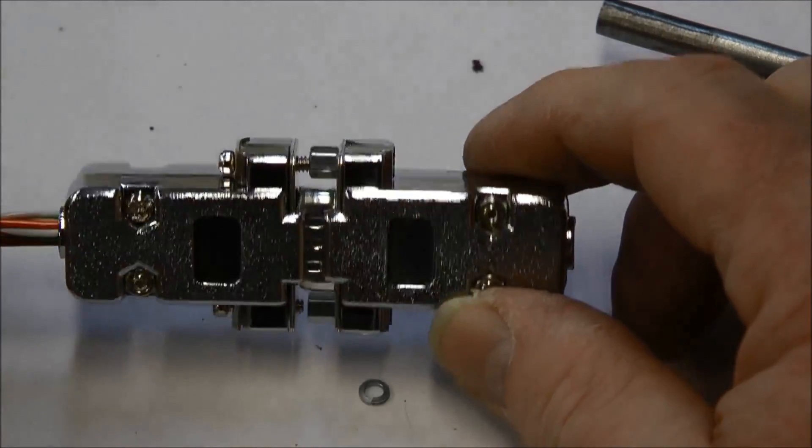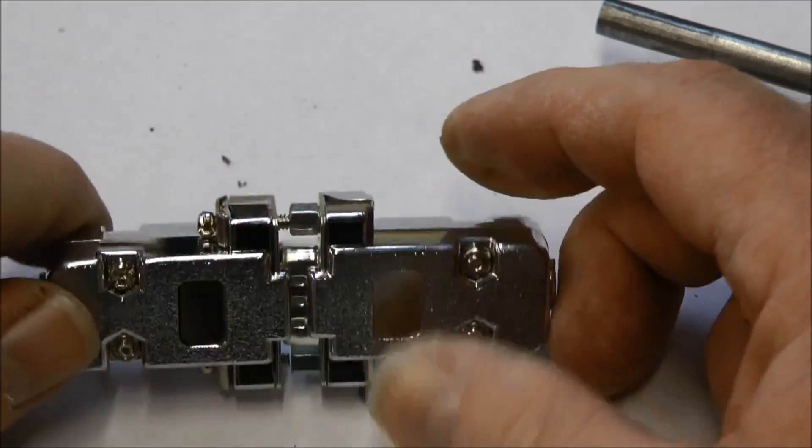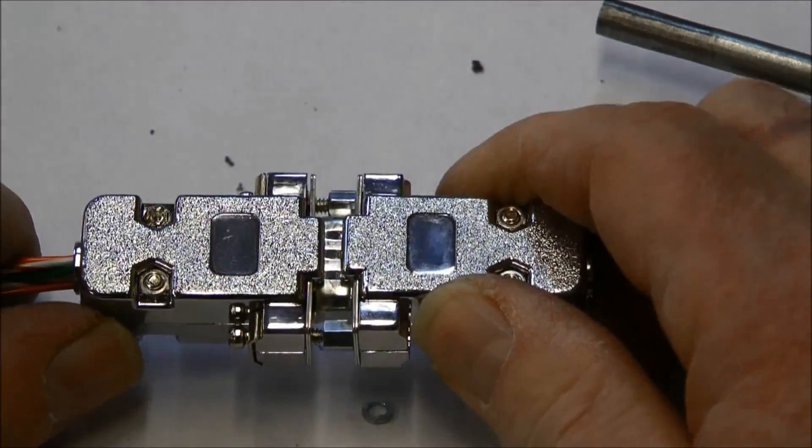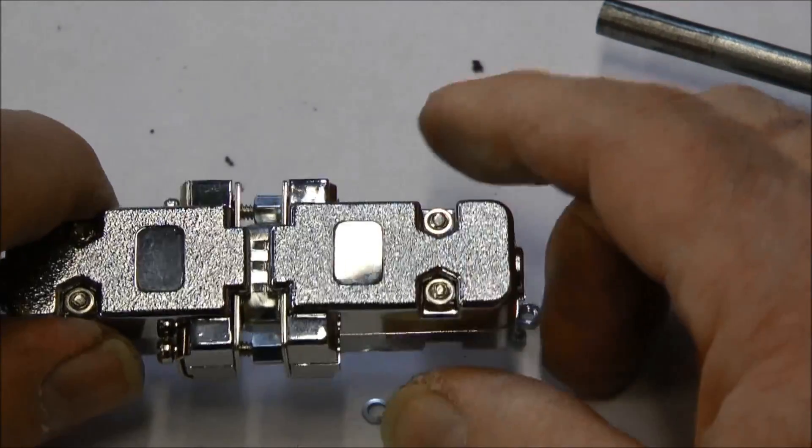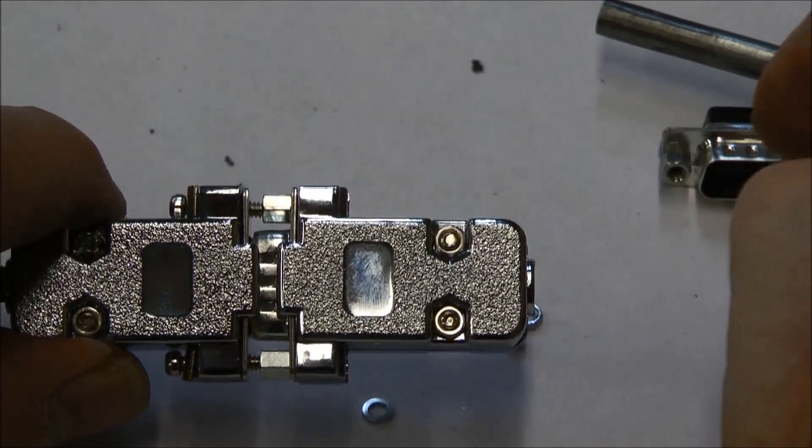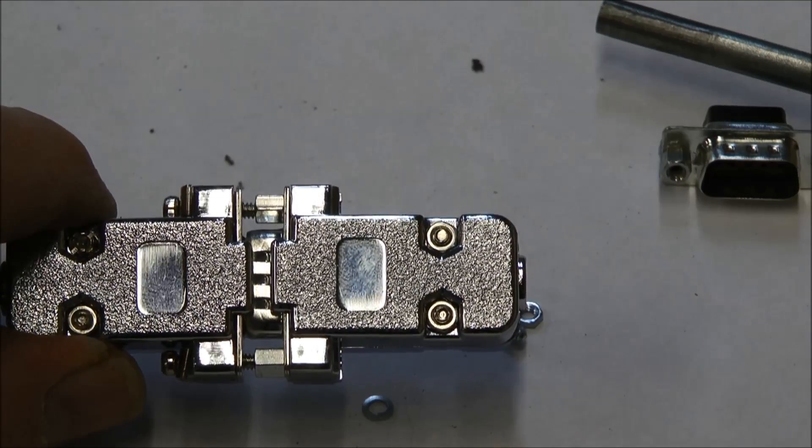Back shells aren't always necessary. You can just use a number four screw here and have two open D-subs if you prefer. We thank you for watching.